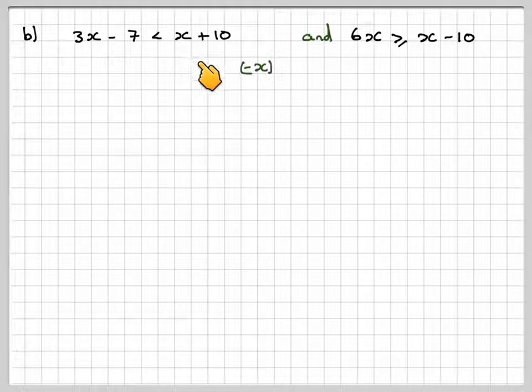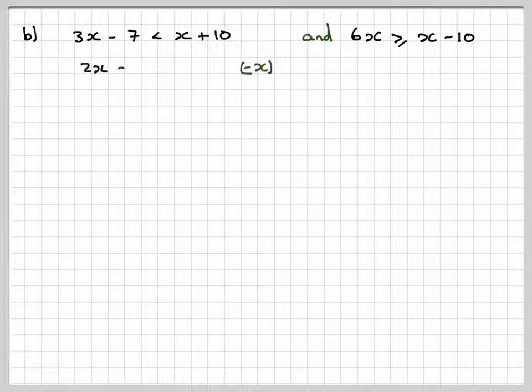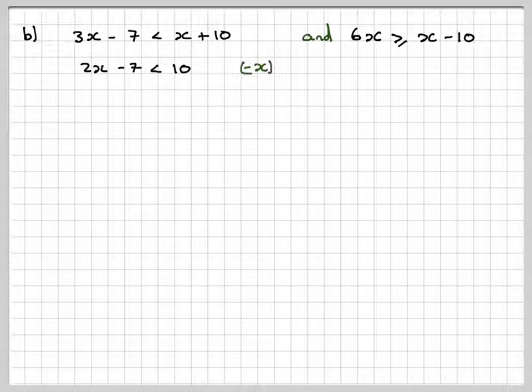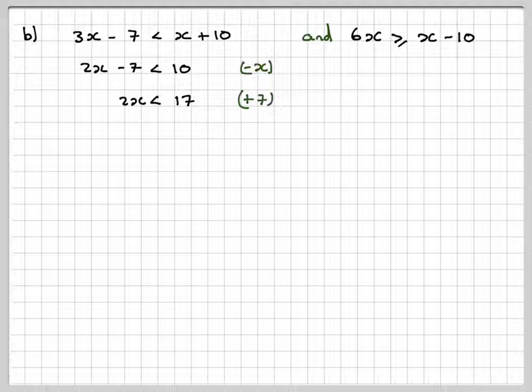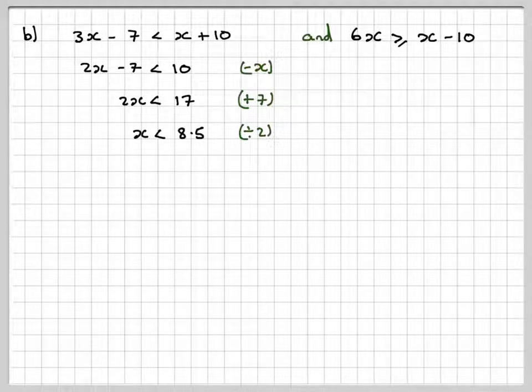For this one, take away x from both sides, you get 2x minus 7 is less than 10. Add 7, so you get 2x is less than 17. Divide by 2 - it's positive 2, so we don't need to change the sign - so x is less than 8.5.